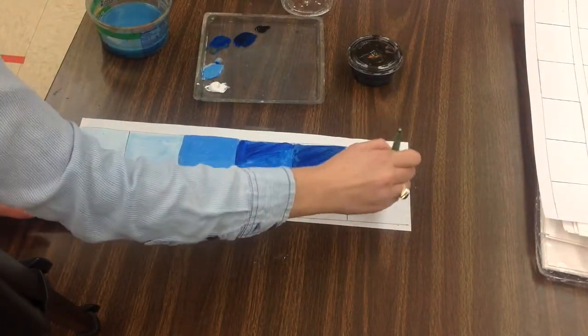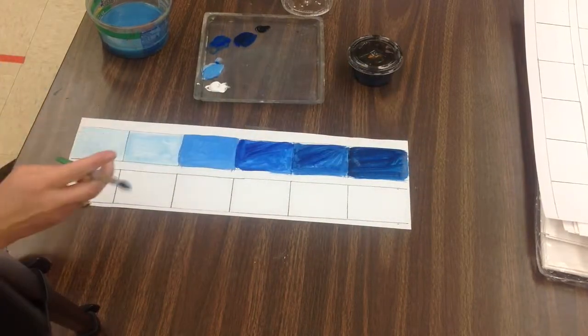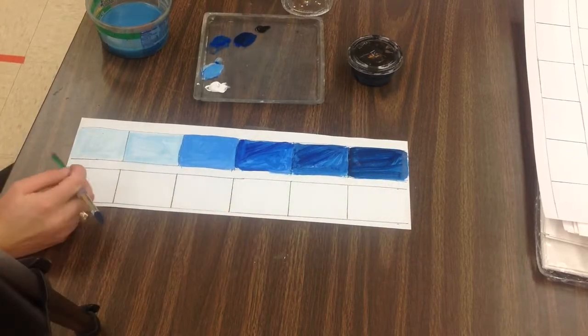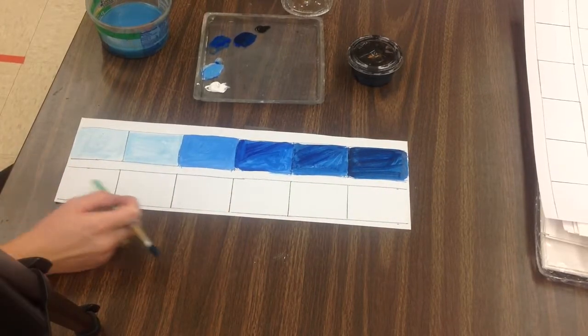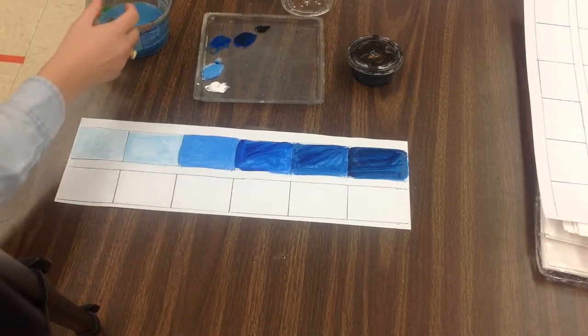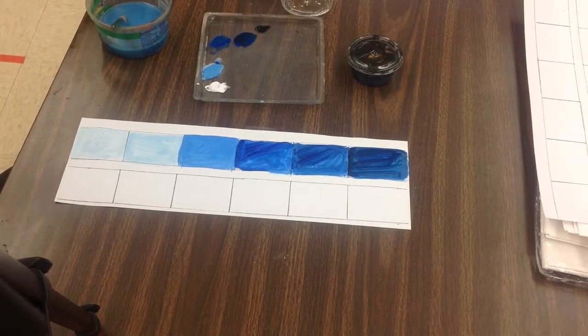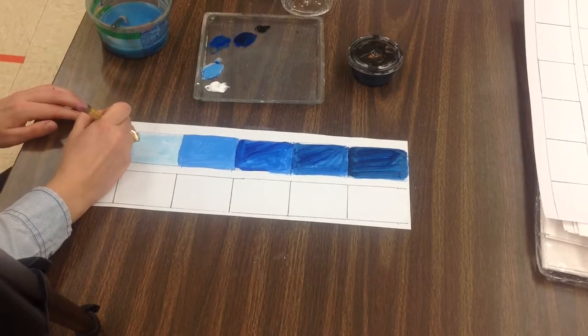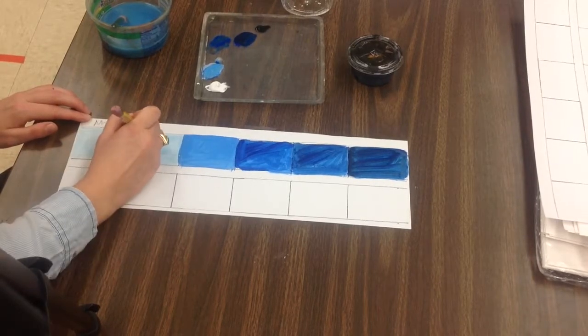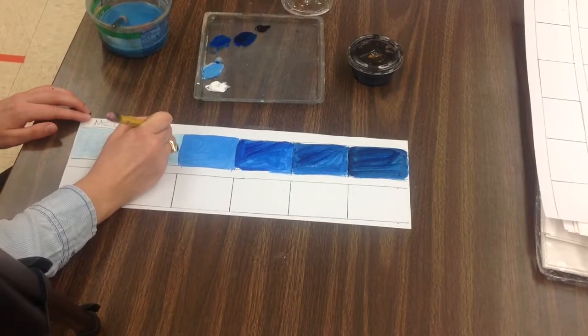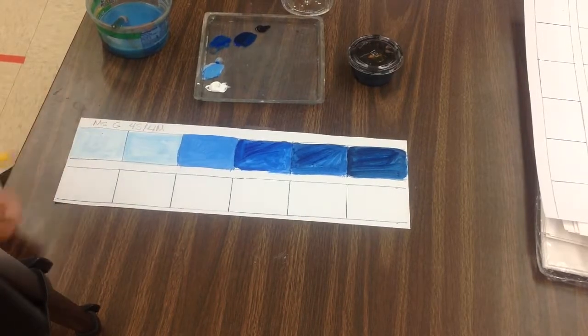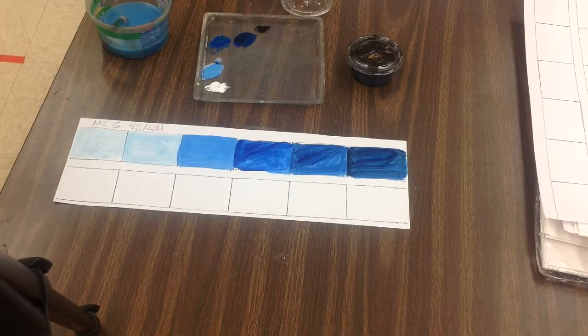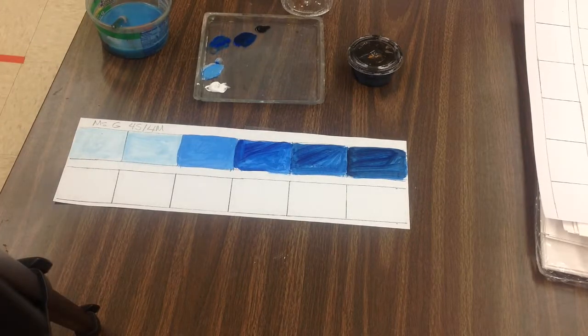So, here is my value scale for blue. I've gone from my lightest blue all the way to my darkest blue. I'm going to do that same thing with another color down below here. Make sure before you turn it into the drying rack that you get your name and class code on it. Miss G4S or 4M at the top or the back, somewhere, so that we know whose is whose. Alright, I'm looking forward to seeing these value scales.